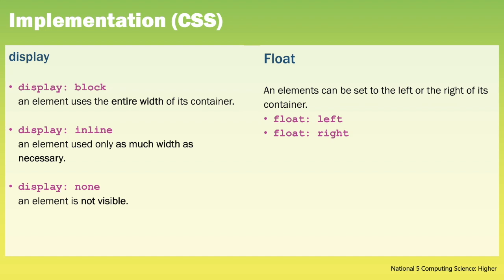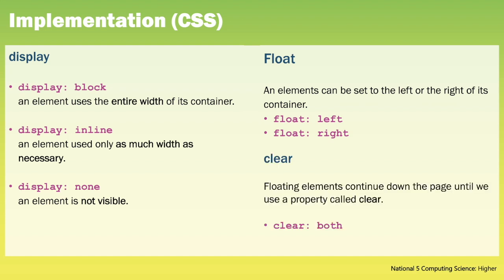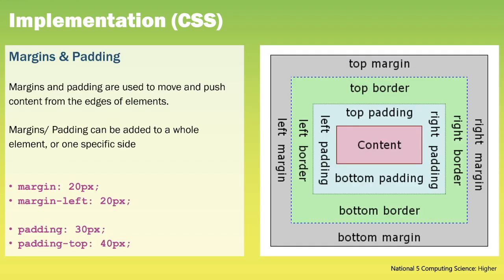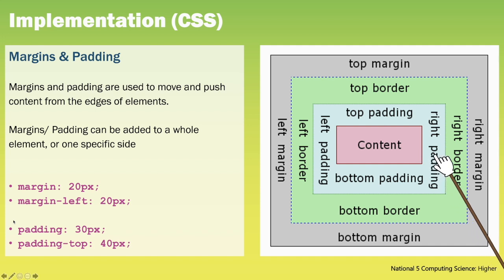Using the float property an element can be set to the left or the right of its container. Floating elements can continue down a page until we use a property called clear. For example if we have a header and a main section and we do not want them to interfere with each other, we can add the clear property to them. Margins and padding are used to move and push content from the edge of elements, much like the box model shown here. The margin is a transparent area around the outside of an element and the padding is a transparent area around the inside of an element. Margins and padding can be added to a whole element or one specific side, for example margin of 20 or margin-left of 20.